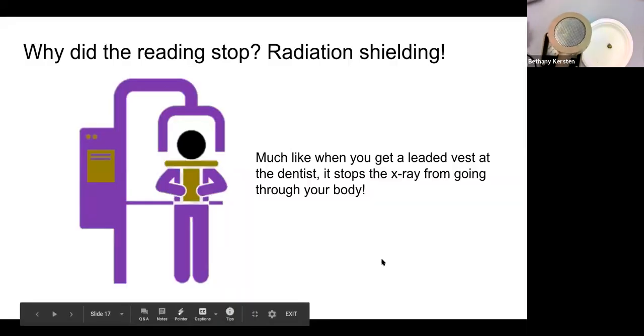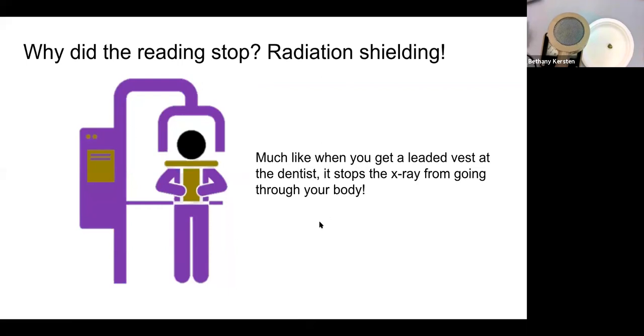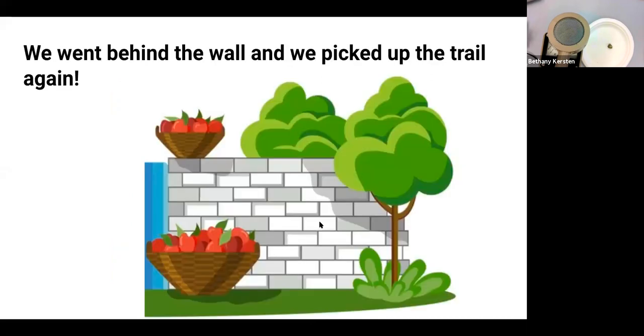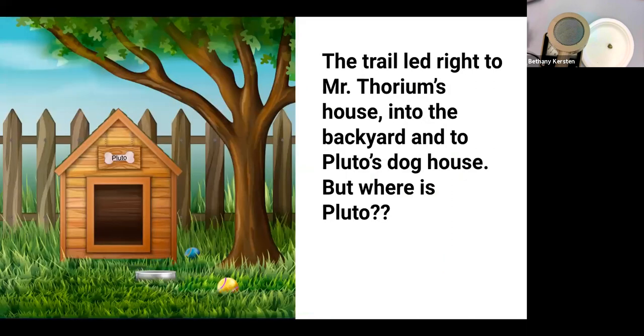Do we think Pluto went back into the dog park or past the wall? Yeah. Good job. So we go behind the wall to pick it back up the trail again. And the trail led us back to Mr. Thorium's house, into his backyard, into Pluto's dog house. But where's Pluto?